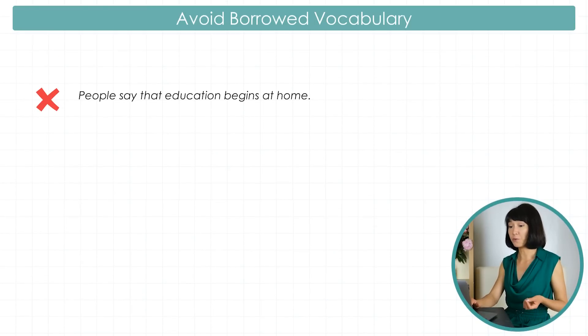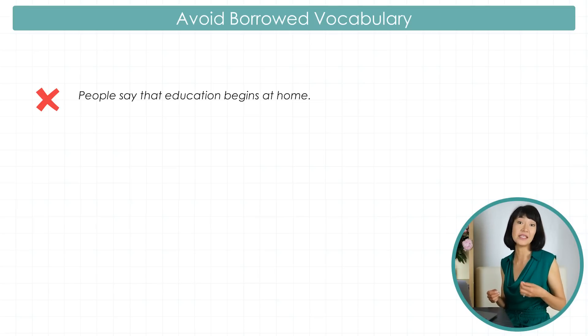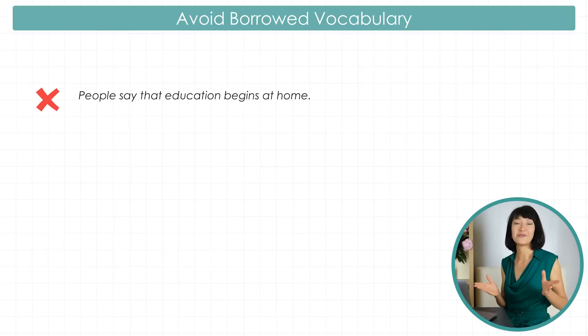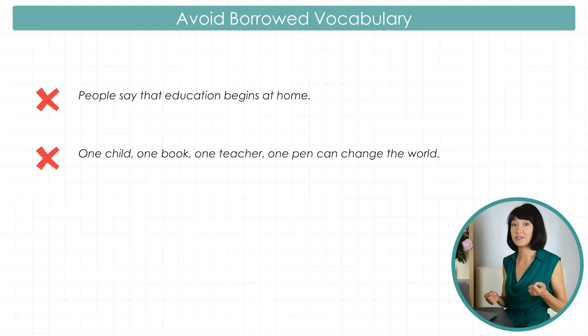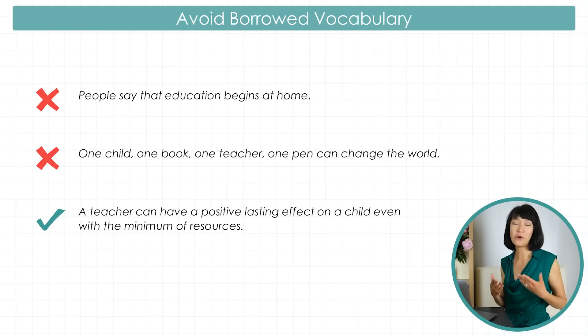As for borrowing, examiners notice when a test taker uses memorized phrases, especially overused and old-fashioned ones. For example, 'Education begins at home' is a stale phrase and may be seen as memorized. Be careful even when quoting someone. The famous quote 'One child, one book, one teacher, one pen can change the world' from Malala Yousafzai's speech is beautifully said, but it's not us who said it. So paraphrase it: 'A teacher can have a positive lasting effect on a child, even with a minimum of resources.'